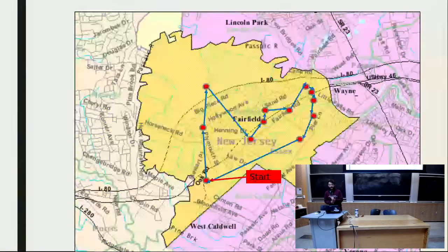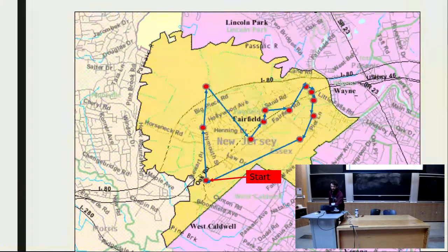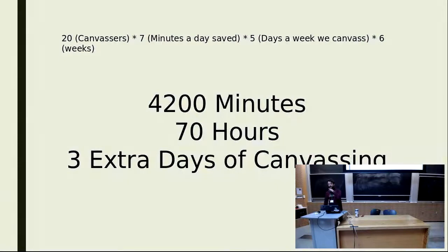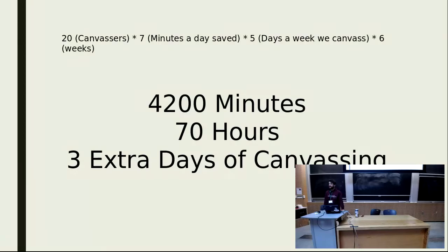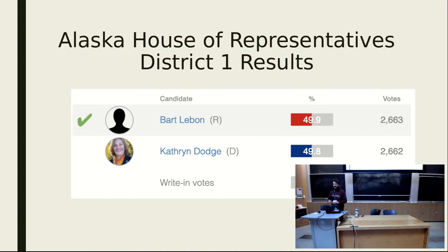I thought: could we apply the traveling salesperson problem to hitting a series of addresses to optimize the number of houses we could knock on? I did some hand calculations with the addresses I was given, and this was the optimal route I could find. As you can see, we're not crossing all over the place — we have a much more efficient route. I realized we could have saved seven minutes during our canvassing. That might not seem like a lot, but if you have 20 canvassers each saving seven minutes a day, working five days a week over six weeks, that's about three extra days of canvassing. Elections in the United States are razor thin, especially in swing districts. We saw this during the Alaska House of Representatives results where the Republican beat the Democrat by a single vote.